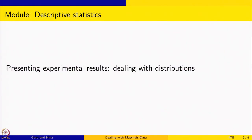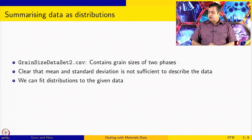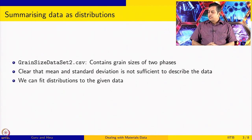We have been looking at how to deal with distributions while presenting experimental results. Specifically, we have been looking at some grain size distributions. This is a case where the steel consists of two phases and the grain size data of both phases is available in a CSV file. It is very clear that if you just look at the mean and standard deviation, it is not sufficient to describe the data. So we need to find distributions that fit the given data.